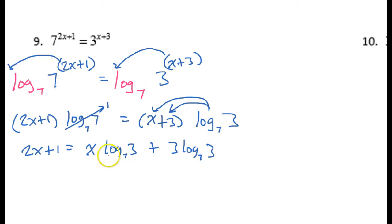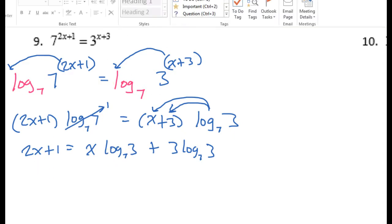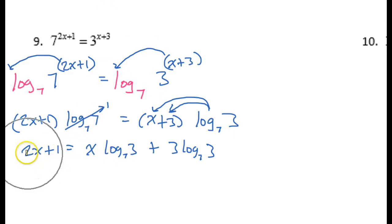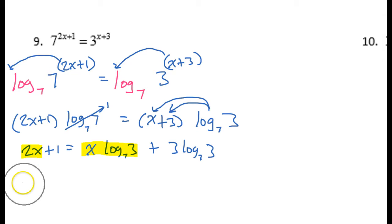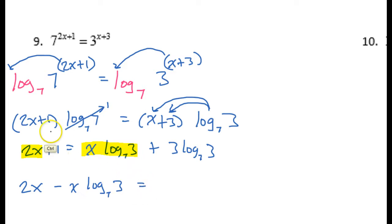I'm going to do two things at once right now. One thing I need to do is get my x terms together on one side of the equation. See how this is an x term and this is an x term — I want both of these to be on the left side together. So I'm going to subtract this, giving me 2x minus x log base 7 of 3 on the left. At the same time, I'm going to move this 1 over to the other side by subtracting it from both sides, so I will have negative 1 plus.